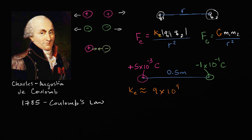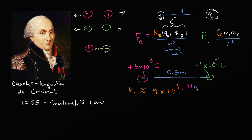What are the units of K? In the numerator, Coulombs times Coulombs gives Coulombs squared, and the denominator gives meters squared. To end up with just Newtons, the units of K must be Newton meters squared over Coulombs squared — the meters squared cancels with the denominator, and the Coulombs squared cancels with the charges, leaving just Newtons.